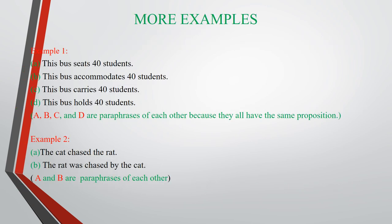Considering more examples on paraphrase: in example one, four sentences are paraphrases of each other because they all have the same proposition. We can say A is a paraphrase of D, B is a paraphrase of D, C is a paraphrase of A, and so on. In example two, 'The cat chased the rat' and 'The rat was chased by the cat' are paraphrases of each other because they both have the same proposition.